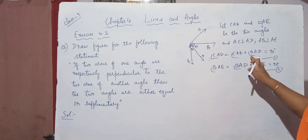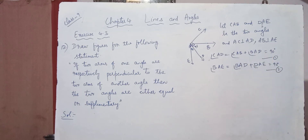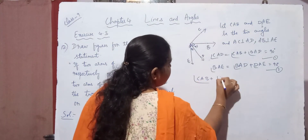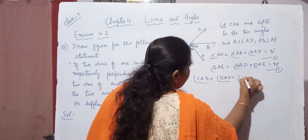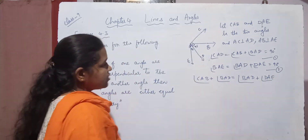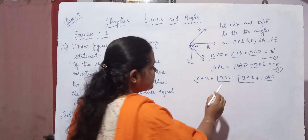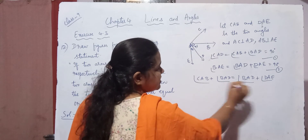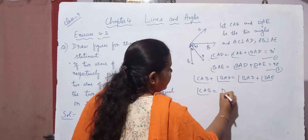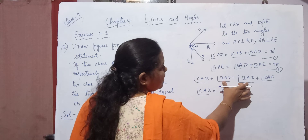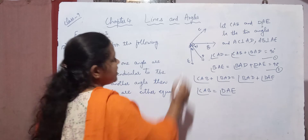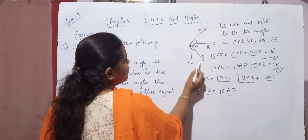Now because both expressions equal 90 degrees, I can equate them: angle CAB plus angle BAD equals angle BAD plus angle DAE. Now if you observe, BAD appears on both sides, so I can cancel it. What will be left out is angle CAB equals angle DAE, because BAD and BAD are equal and cancel out. So I will get CAB equals DAE.